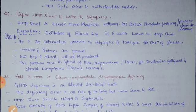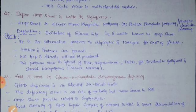This pathway occurs in the cytosol of liver, adipose tissue, and testis. It is involved in fatty acid formation and steroidal biosynthesis, as all fatty acid biosynthesis and steroidal biosynthesis require the NADPH molecule that is produced in the HMP shunt.